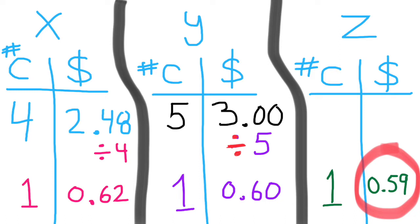Store Y offers 5 cans for $3. So I'm going to divide $3.00 by 5. Store Z offers the cans at $0.59 each.